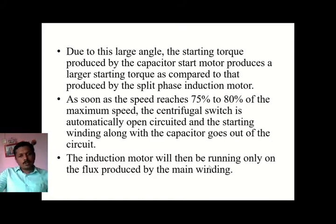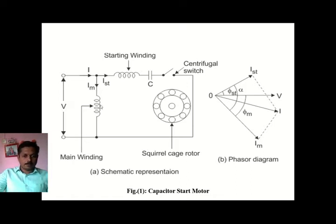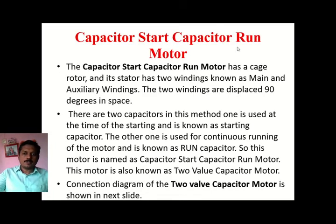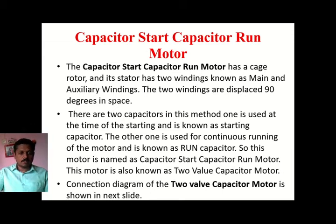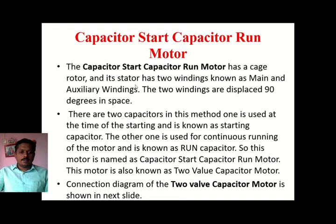The induction motor will then be running only on the main winding flux. In the second stage, when the centrifugal switch operates, it disconnects the starting or auxiliary winding and the motor runs only on the main winding. Now, the capacitor start capacitor run motor has a squirrel cage rotor, and its stator has two windings known as main winding and auxiliary winding.